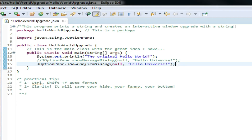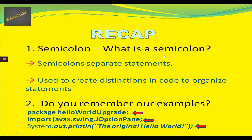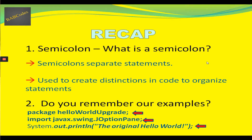It seems like you understand the importance of a semicolon, so let's wrap up this video on semicolons with a recap. In this video, you've learned what a semicolon does and how it is used. What is a semicolon? Semicolons separate statements, used to create distinctions in code to organize statements. Package hello world upgrade with a semicolon that ends the package. The import javax.swing.JOptionPane — we put a semicolon at the end so the program can see that it's ended. We've also added the statement System.out.print on a new line, the original Hello World, and ended that statement with a semicolon.